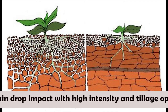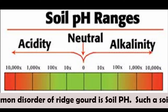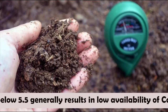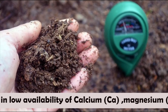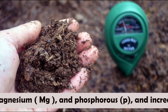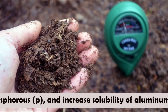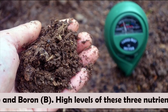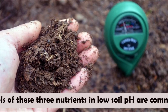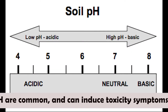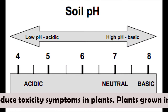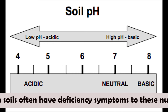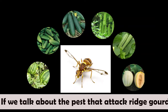Another common disorder of ridge gourd is related to soil pH. Soil with a pH below 5.5 generally results in low availability of calcium, magnesium, and phosphorus, and increases the solubility of elements like aluminium, iron, and boron. High levels of these three nutrients at low soil pH are common and can induce toxicity symptoms in plants. Plants grown in alkaline soils often show deficiency symptoms of these nutrients.